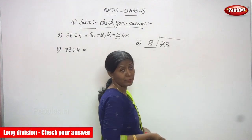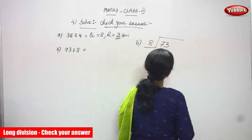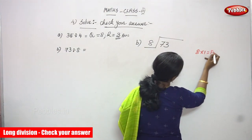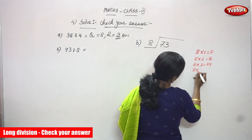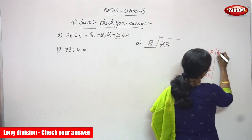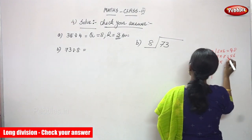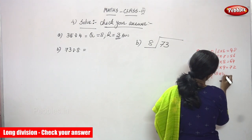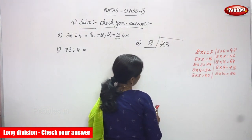Now 73 is greater than 8, so it is enough to divide. Divided by 8, you must use the 8 times table up to the nearest value to the dividend: 8×1=8, 8×2=16, 8×3=24, 8×4=32, 8×5=40, 8×6=48, 8×7=56, 8×8=64, 8×9=72, 8×10=80. You must stop at 8×9=72.